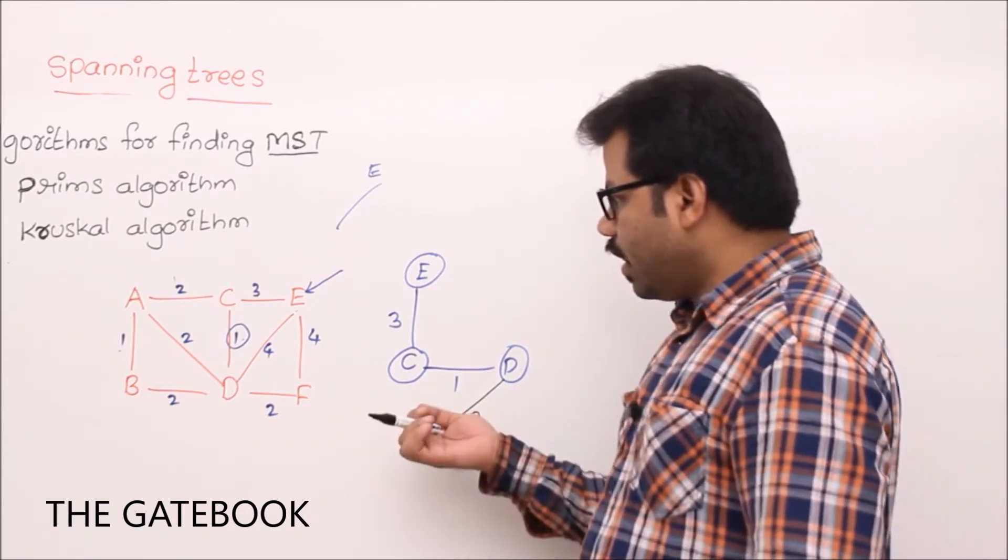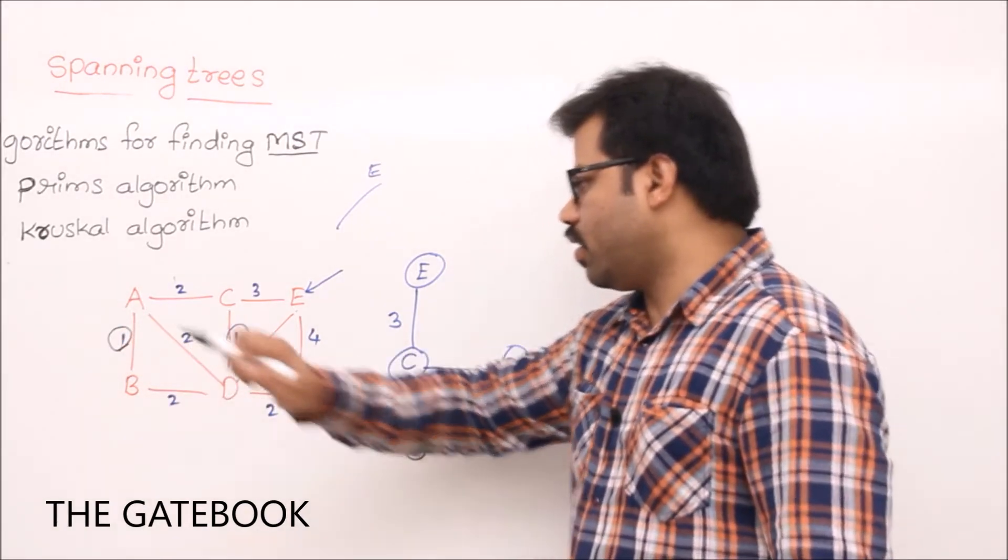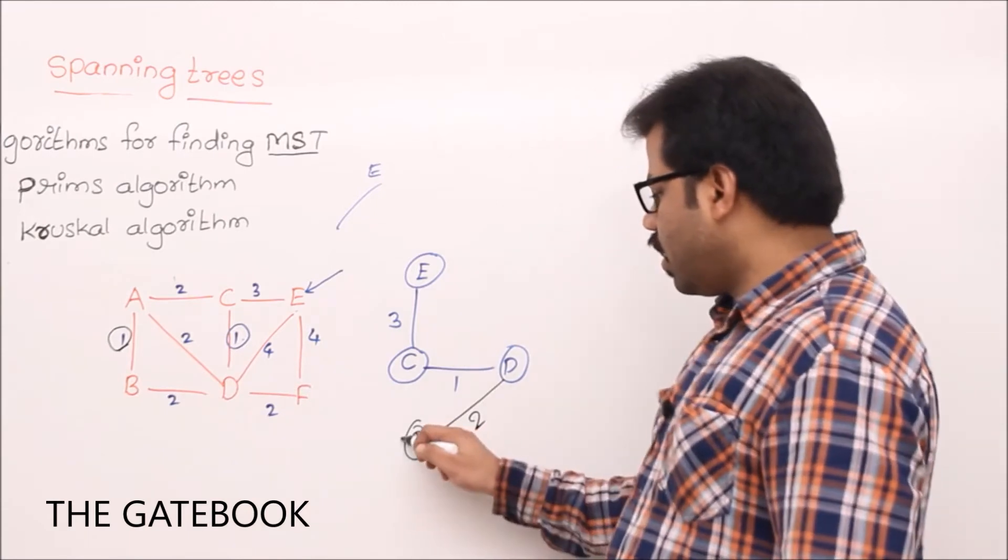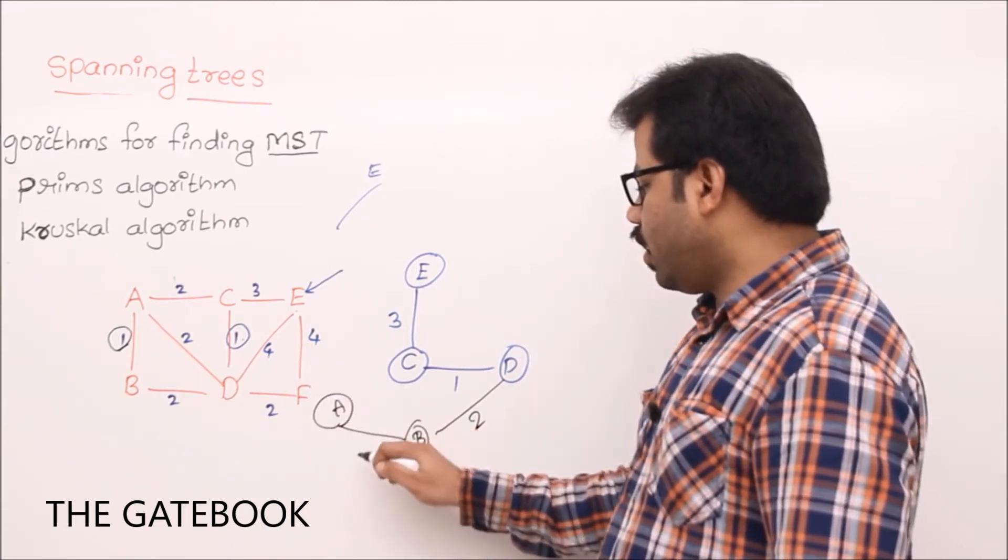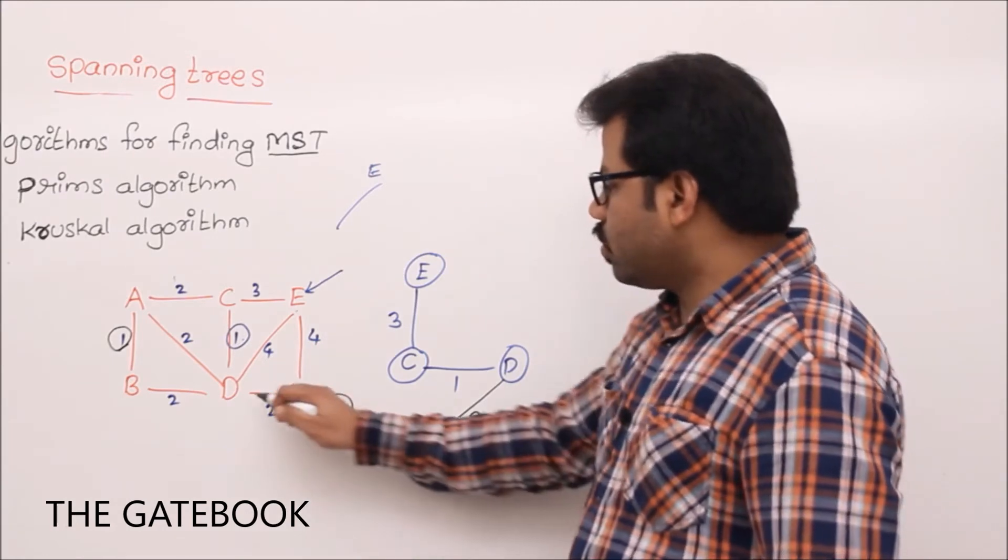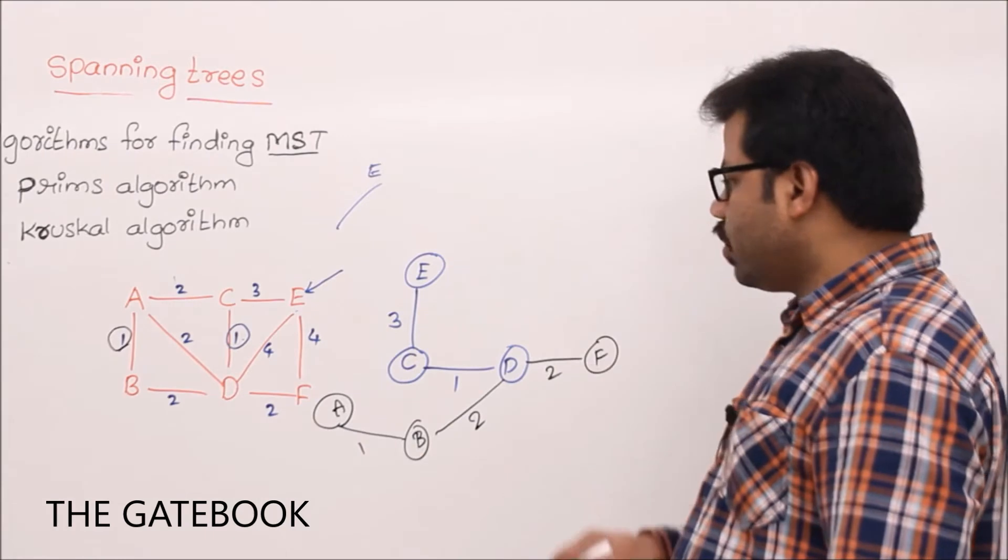Now, after that, next minimum number, see, this time again minimum number will become 1, correct? Because B is visible now. Let's connect B to A. Then I get 1. Next minimum number is again 2. So, which 2 we will take? So, we can take DF, right? Which is 2?